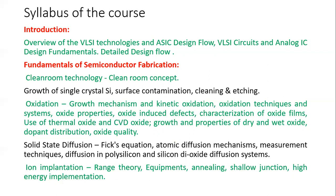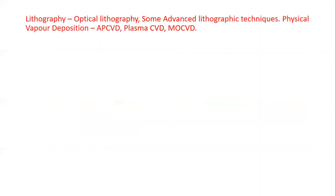Once diffusion is covered, we look forward to lithography — how you get a particular pattern, whether it be an NMOS, a PMOS, a CMOS, or providing electrical contacts via metals from one layer to another. MOS is not a single entity on an IC; there are billions of transistors that need to be connected across many layers. All of this can be achieved with lithography and its various types.